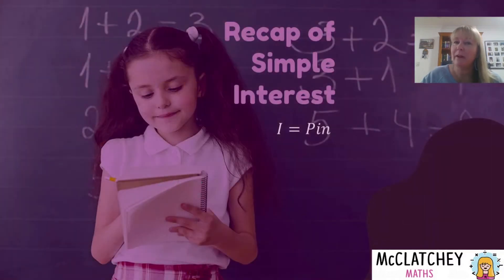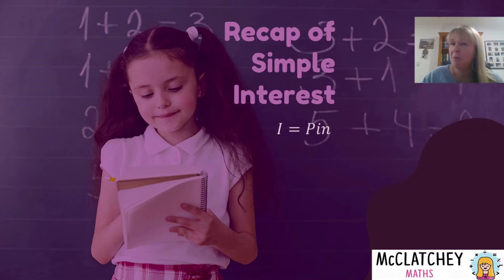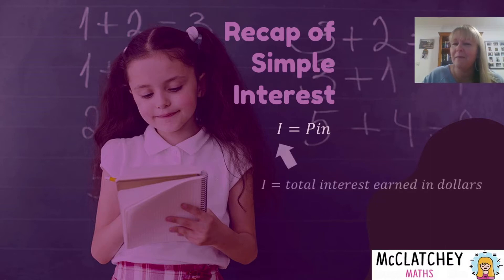So in this part we're going to do a very quick recap of what simple interest is, because if you're in year 12, the last time you looked at this was grade 11. So you should know this formula by now. It is on your QCAA formula sheet if you're in Queensland. I equals PIN — but you should know it off by heart; you've known this one since grade 9.